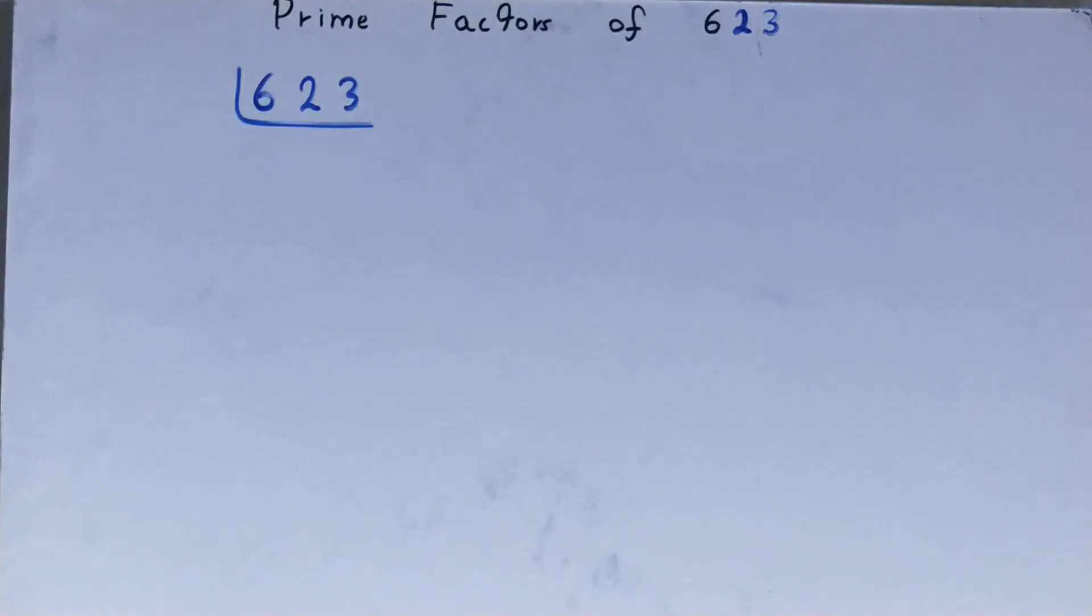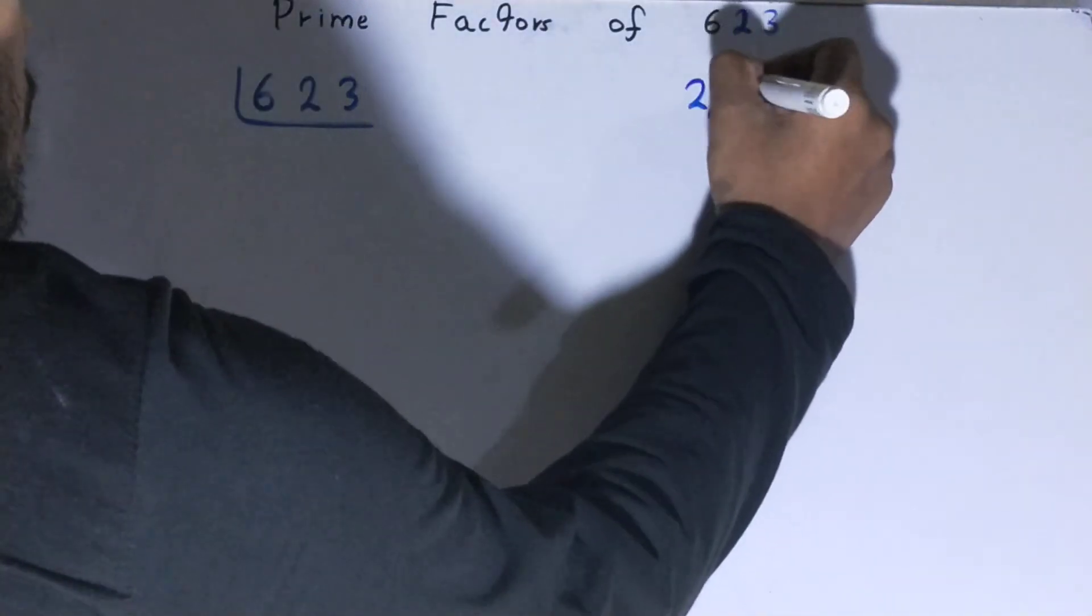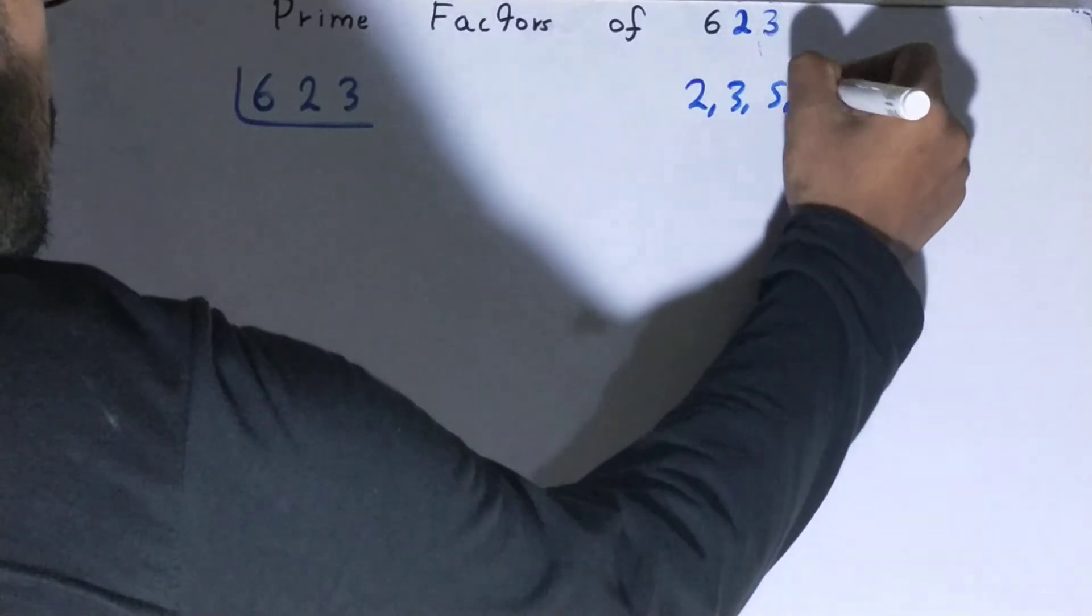Before solving this any further, you must have an idea about what prime numbers are. Prime numbers are numbers that are divisible by 1 and the number itself, like 2, 3, 5, 7, and so on.